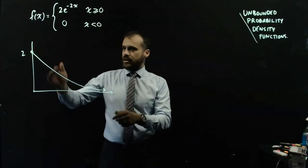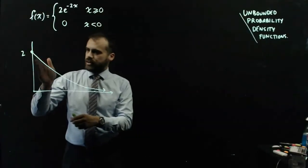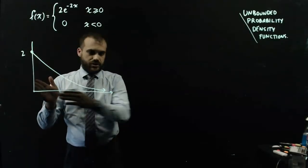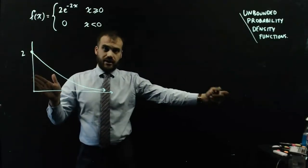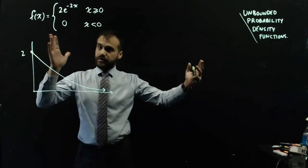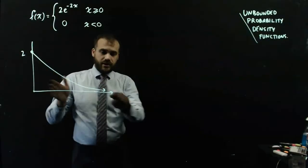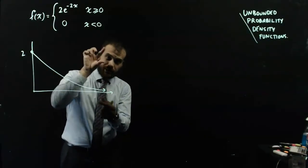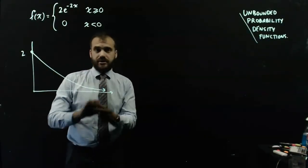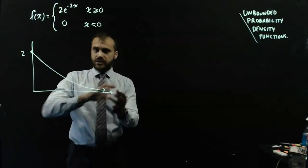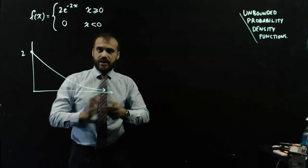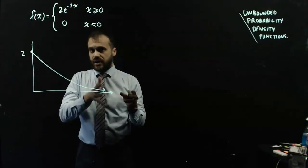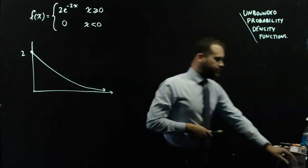That means the area from 0 to infinity, if it's a probability density function, is equal to 1, but the gap never actually completely closes. We've got some mathematical trickery going on, and for that we really need limits.